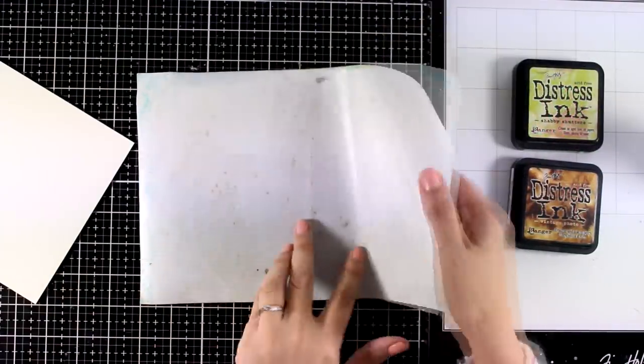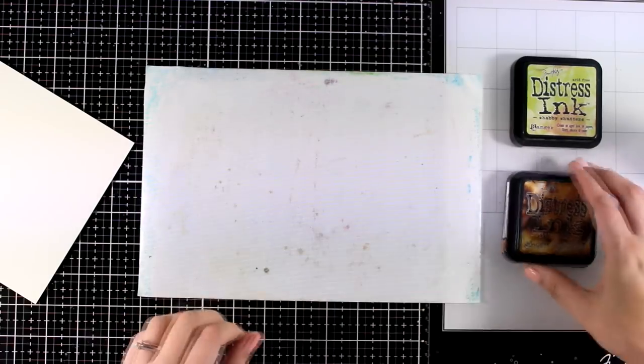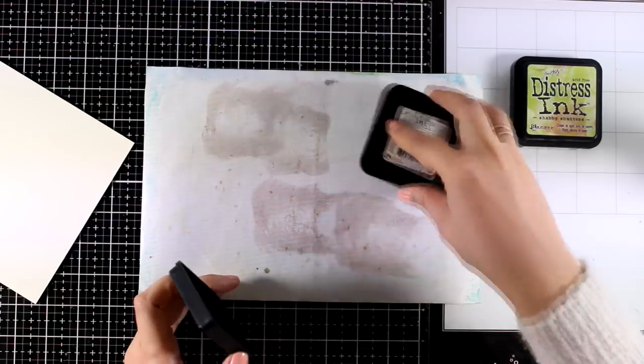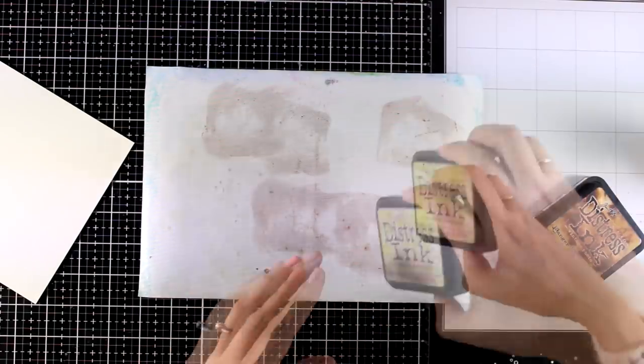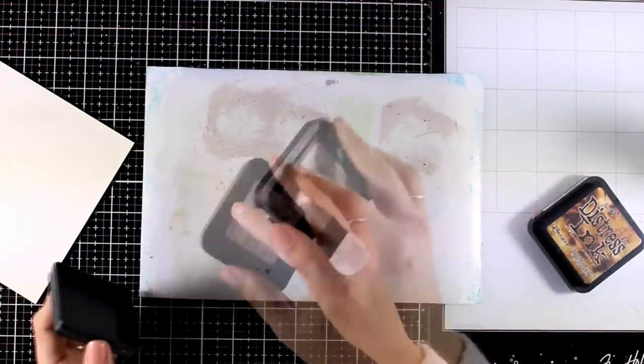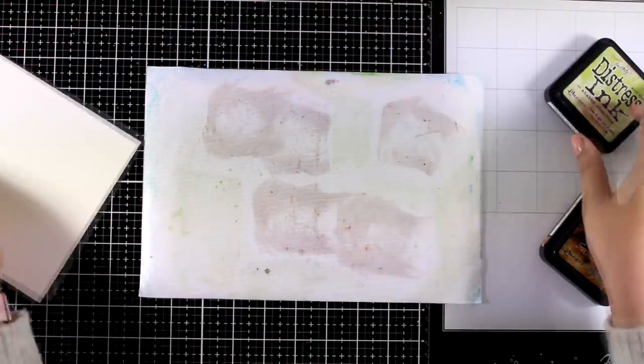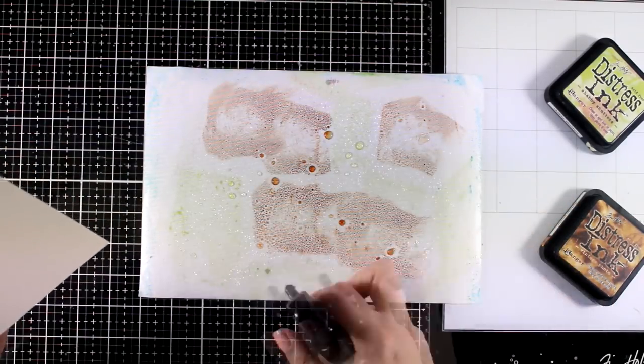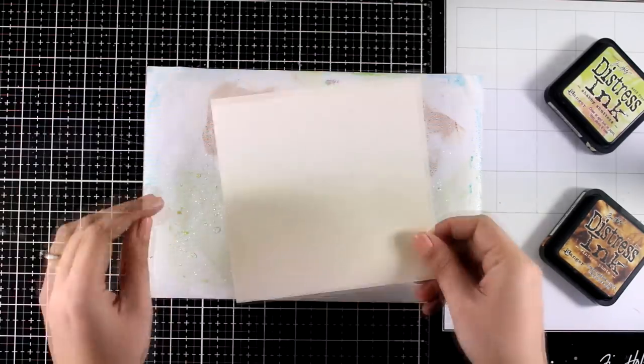Today I decided to work on a 6x6 paper and I'm going to play with my distress ink. I will use one of my favorite techniques which is smoothing ink on top of a non-stick mat. The colors that I'm working with today are Shabby Shutters and Vintage Photo. I have applied lots of ink on my mat since I'm going to cover a 6x6 paper.